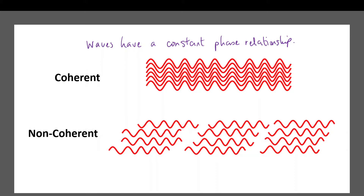The waves at the top are perfectly coherent — they're in phase and they stay in phase. At the bottom, we have non-coherent waves; they vary in frequency and wavelength and are not all in step all the time. If you get two sources of different frequencies interfering, you won't get a stable superposition pattern. If you have two sources of the same frequency — whether in or out of phase — they will produce a stable superposition pattern because they're coherent and their phase relationship does not change.